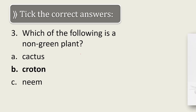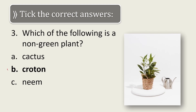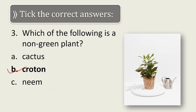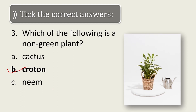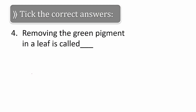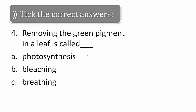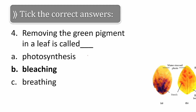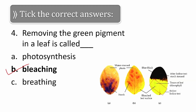Next question: which of the following is a non-green plant? The options are: cactus, croton, neem. The correct answer is croton — croton is a non-green plant. Next question: removing the green pigment in a leaf is called — photosynthesis, bleaching, or breathing? It is a chemical process called bleaching. Let us tick mark bleaching.